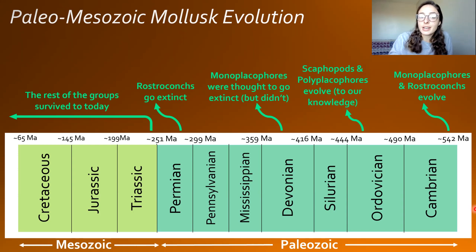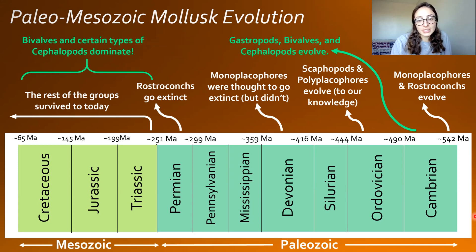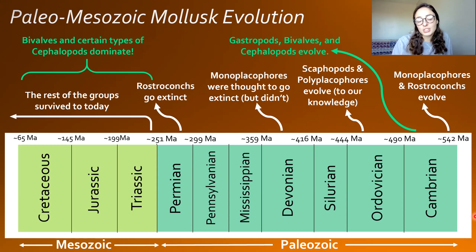If we include the other classes, Caudofoveata and Aplacophora likely evolved early in the Cambrian before the shelled groups, but without shells there's no record to really tell. Bivalves, gastropods, and cephalopods evolved in the mid to late Cambrian. Bivalves dominated in the Mesozoic era, and some types of cephalopods like ammonites were also really common then. We'll talk way more about bivalve, gastropod, and cephalopod evolution in the next two mollusk videos.